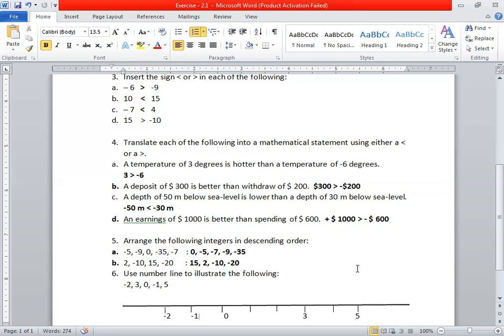In the second part, we have 2, minus 10, 15, minus 20. Start from the highest number: 15, then 2, then minus 10, then minus 20. This is the order.